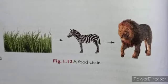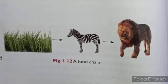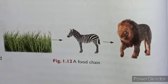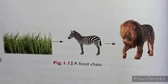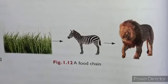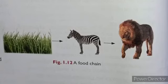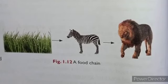So this is about food chains. In this class we have learned the food habits of animals. Based on food habits, animals and humans can be classified into herbivores, carnivores, omnivores, scavengers, and parasites.